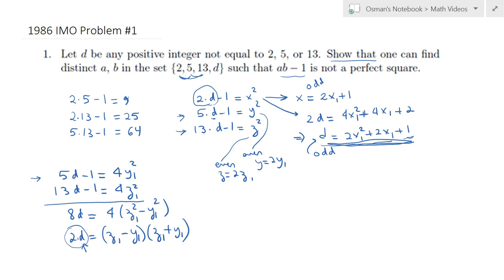The left-hand side is definitely divisible by 2 but not by 4. 2d is divisible by 2 but not by 4. So you can think of it as 2 mod 4.